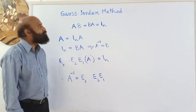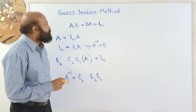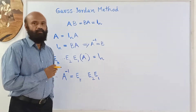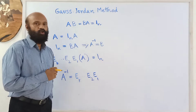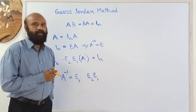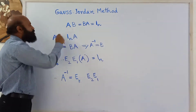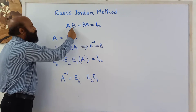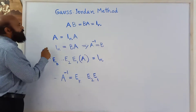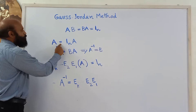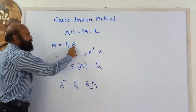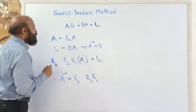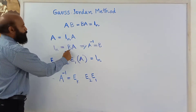In the Gauss-Jordan method, we already completed one theorem: if A is a non-singular matrix, it can be transformed to an identity matrix by a series of elementary row transformations, or by pre-multiplying by elementary matrices. Now, if B is the inverse of A, then A times B equals the identity matrix. A can be written as A equals identity matrix times A, because multiplying a matrix by the identity gives A itself.